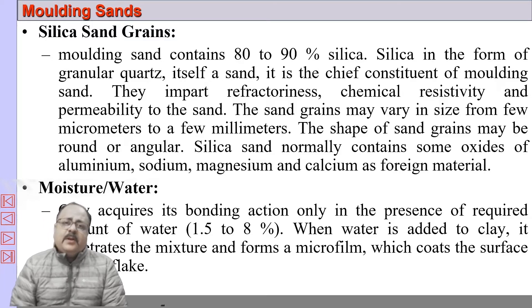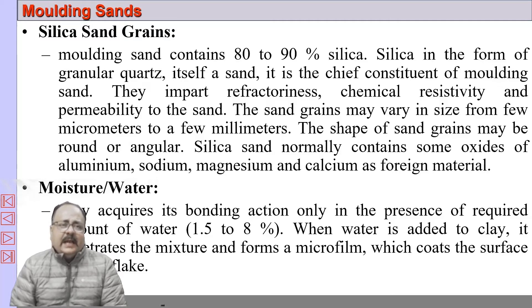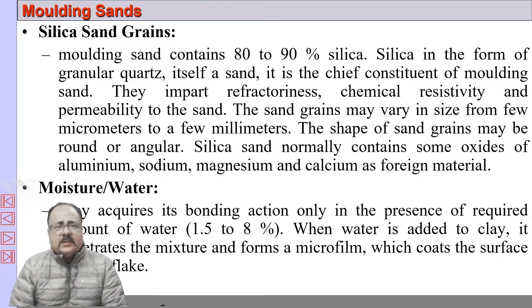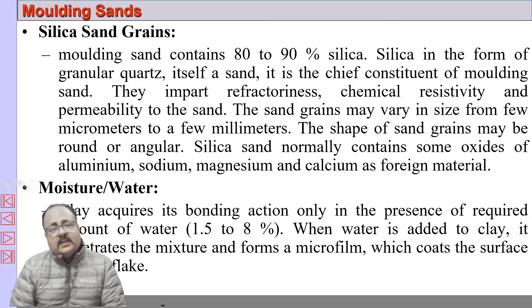The principal molding material of a sand casting process is molding sand. Molding sand consists of silica grains, moisture, and clay. Starting with silica sand grains: it contains around 80 to 90 percent of the molding sand, consisting of dried silica. It is granular quartz and is the main constituent. The reason we add silica sand grains is because they impart refractoriness — resistance to high temperature — and do not fuse at low temperatures.